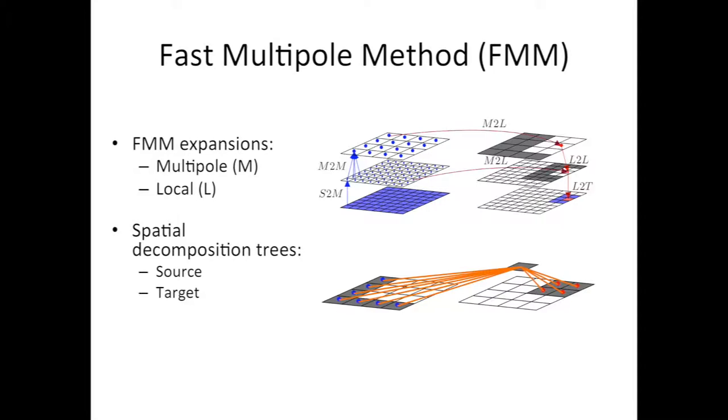One of the challenges in scalable execution of FMM is the placement of expansion data. Offline analysis is often impractical as the DAG is constructed dynamically from the input ensembles. In this demonstration, the expansion LCOs are initially placed randomly across all localities.